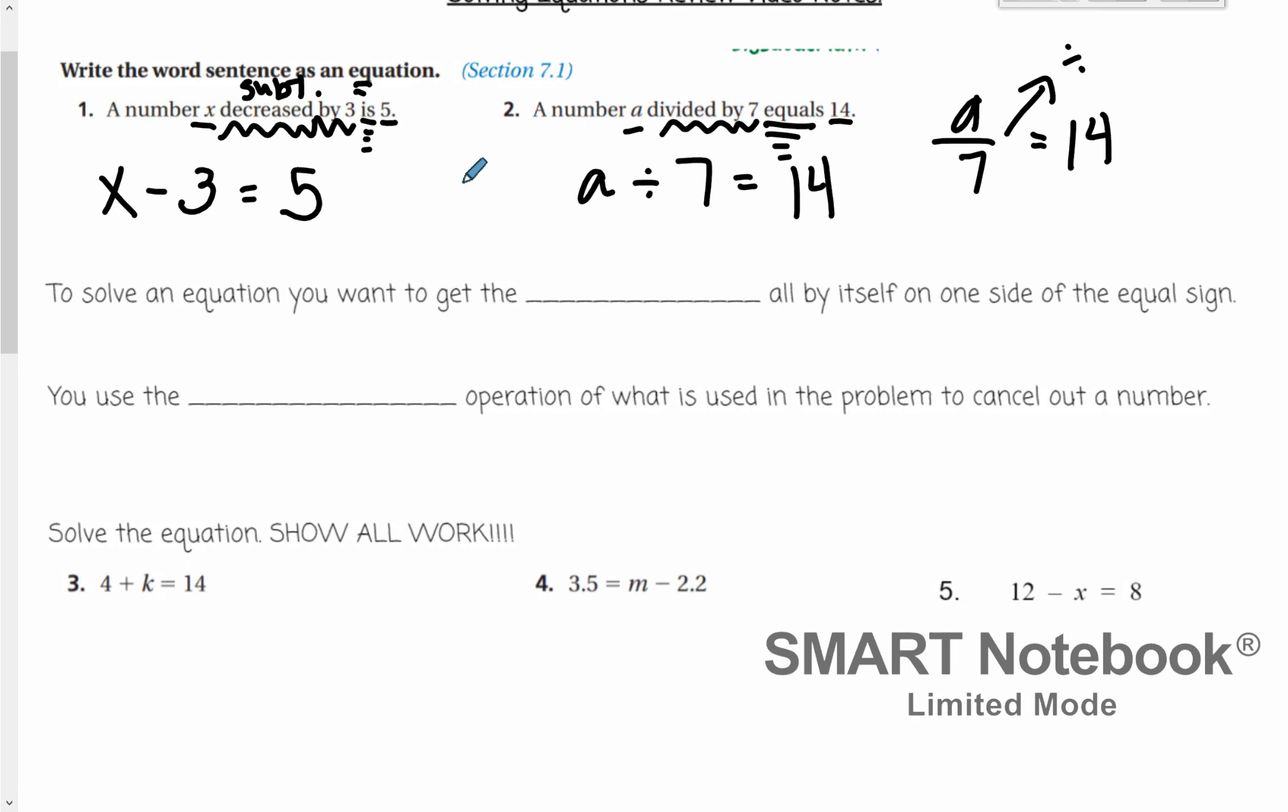Now we're going to get into solving equations. To solve an equation, you want to get the variable—remember that the variable is just the letter—all by itself on one side of that equal sign. So if our k is over here, we want just the k to be over here. We want to get rid of that plus 4. We want that variable all by itself.